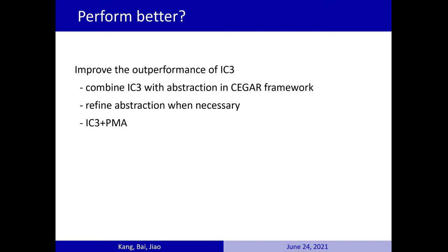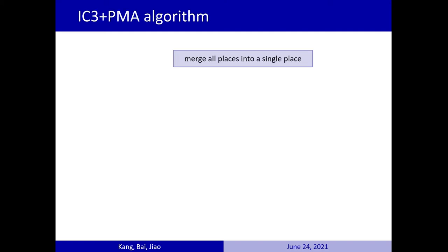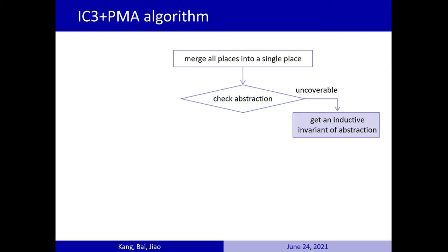If necessary, abstraction is refined. We call the new method IC3 plus PMA. Here is the structure of our method. First, it initially generates a coarse abstraction by merging all places into one. Then, it checks the abstraction by IC3. If uncoverable in abstraction, we can get an inductive invariant of the abstraction and conclude that MT is uncoverable in the original model.